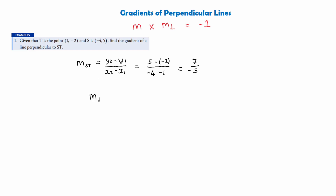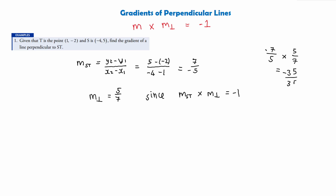This gives us 7 over −5, so the gradient of ST is negative seven over five. Using our flip-and-change-sign rule, the gradient of a perpendicular line to ST is positive five over seven. It's important to also state why: since m-sub-ST times the perpendicular gradient equals minus one. We can verify: negative seven over five times five over seven equals minus 35 over 35, which equals minus one. This confirms our perpendicular gradient is correct.